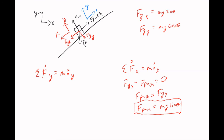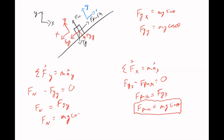If the problem also asks for the normal force, we go to the Y direction. The normal force minus the Y component of gravity equals zero, so the normal force equals M·G·cosine theta.